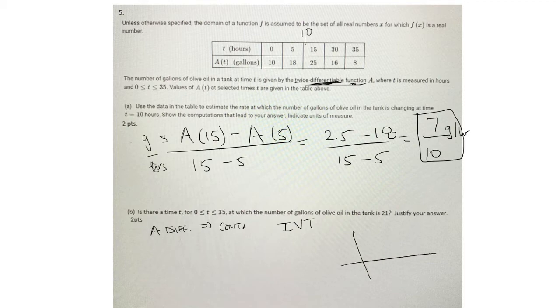So if I were to plot this for example, so it's 0, it's 10, it's 5, it's 18, 15, it's 25.